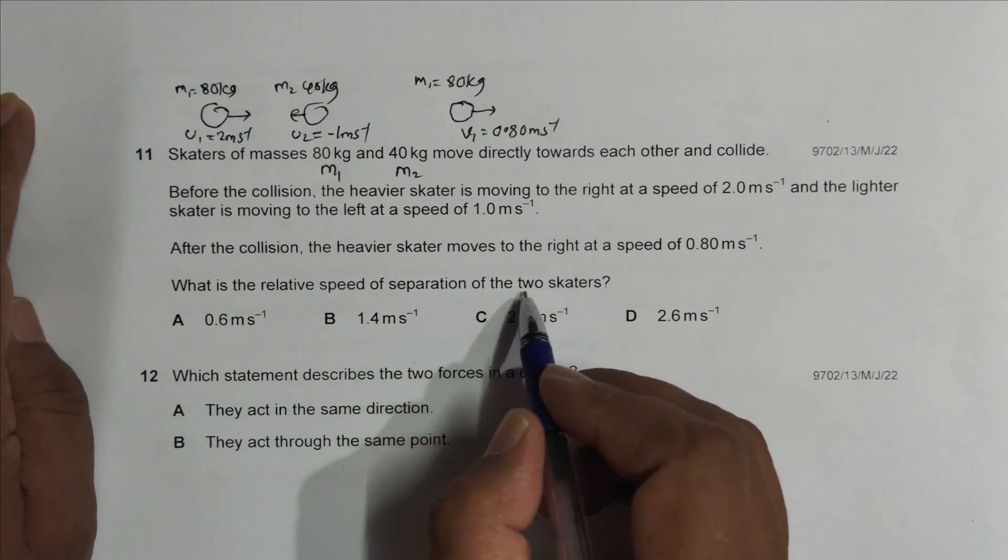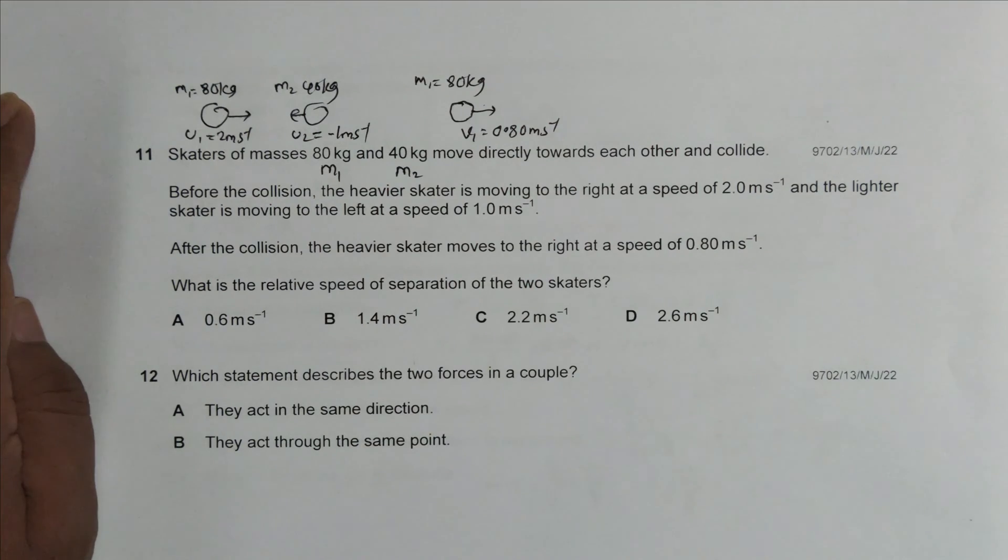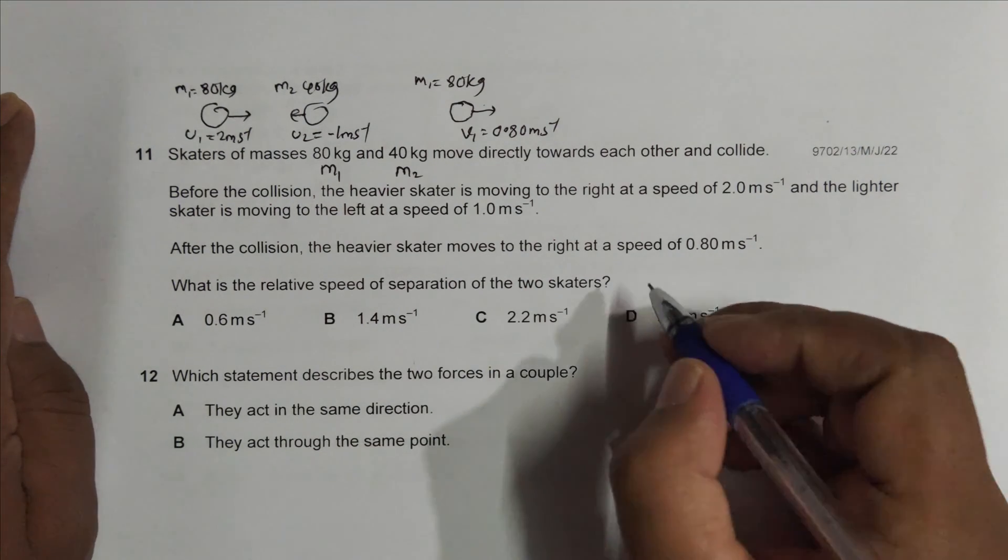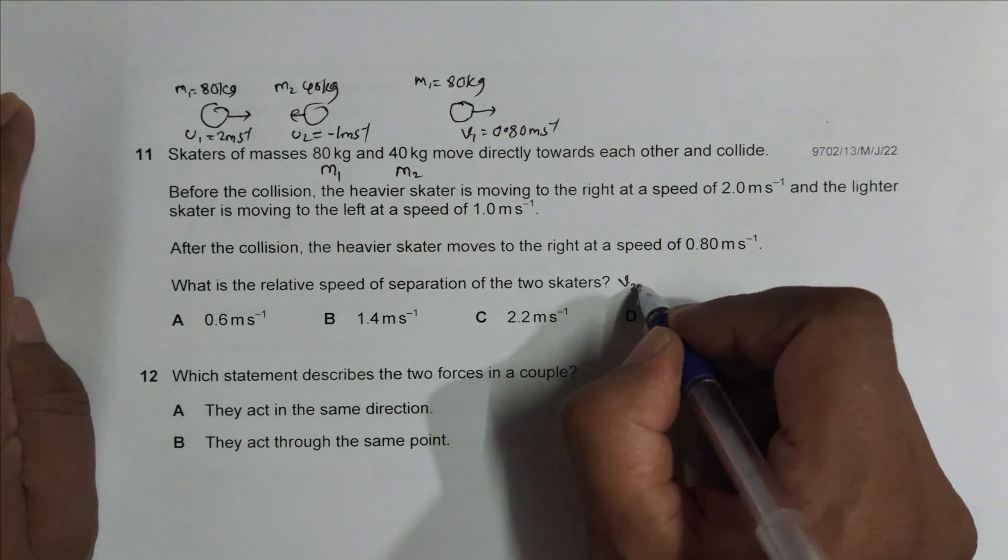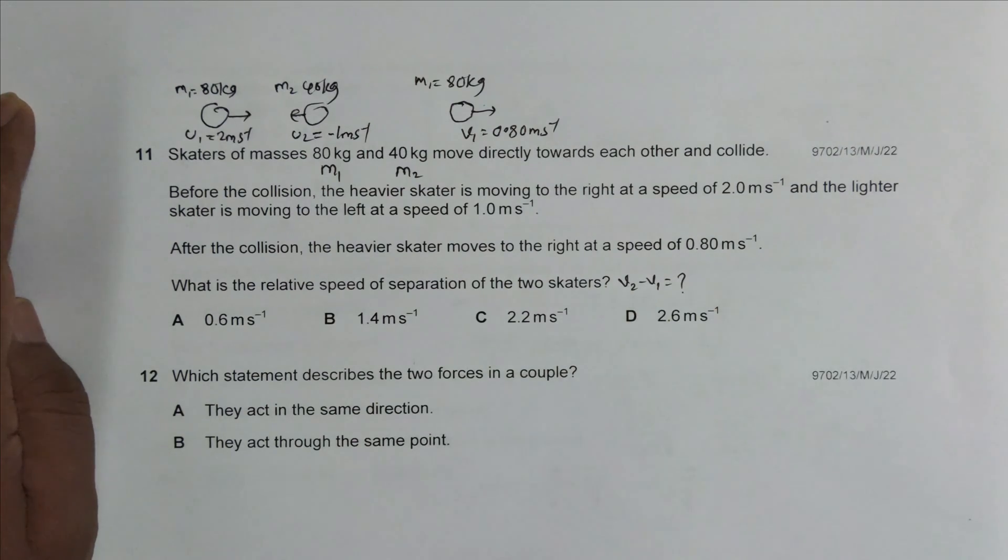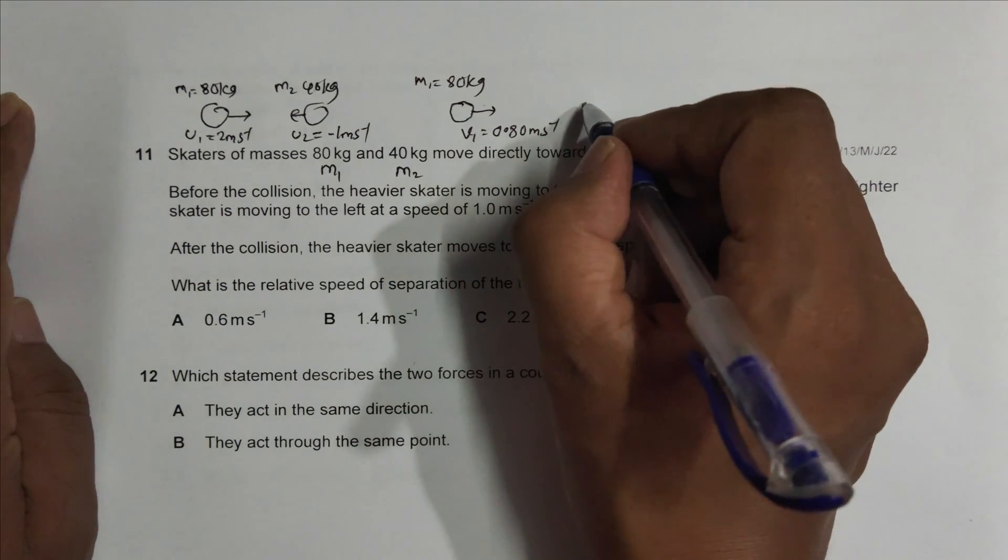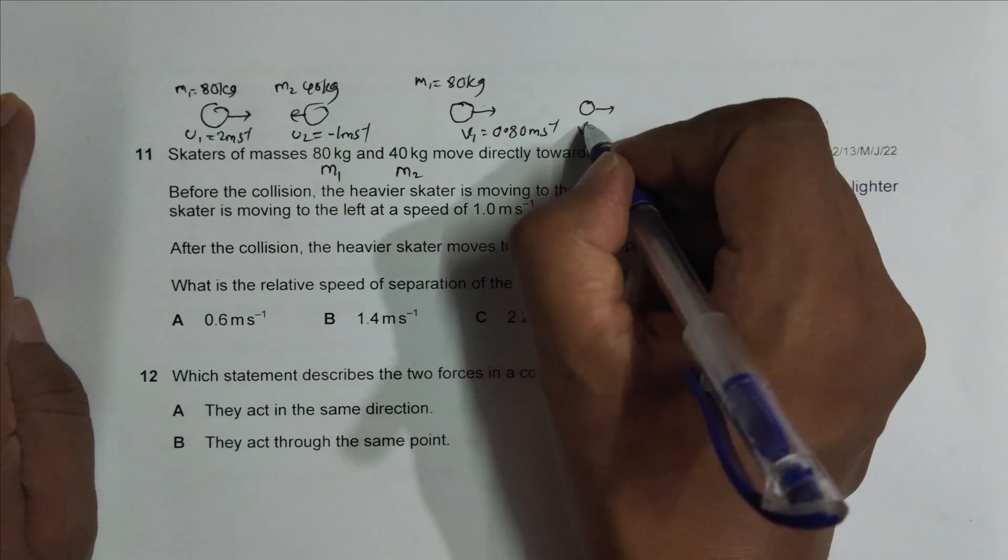relative speed of separation of the two skaters? So we have to find the relative velocity of separation, which means v2 minus v1 is equal to what. So for that, first we have to find this v2.